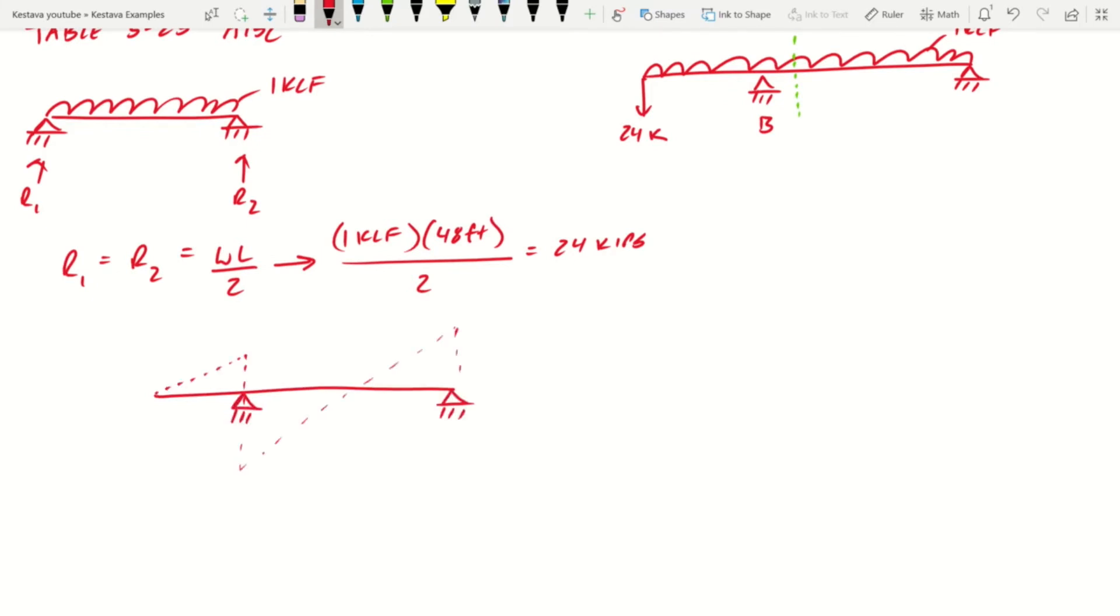Now, if we looked at a propped cantilever with distributed load at our shear diagram, we have something like this. And what we want, so this is our shear diagram, and what we want is that shear value. And that is denoted as V3 in the table.